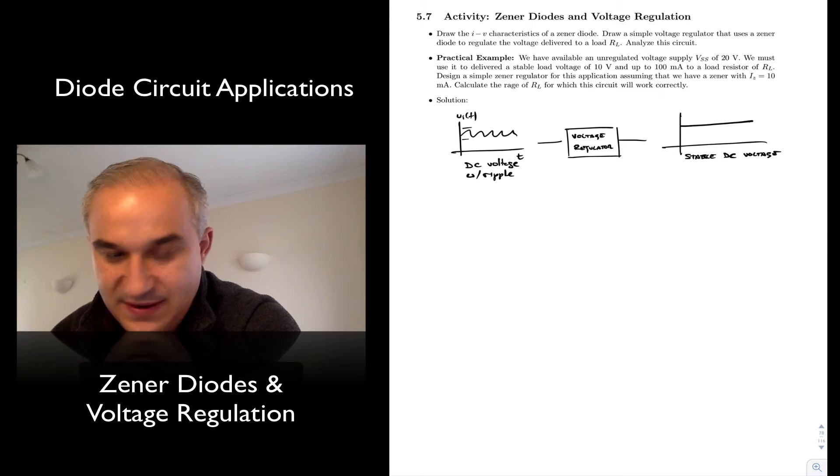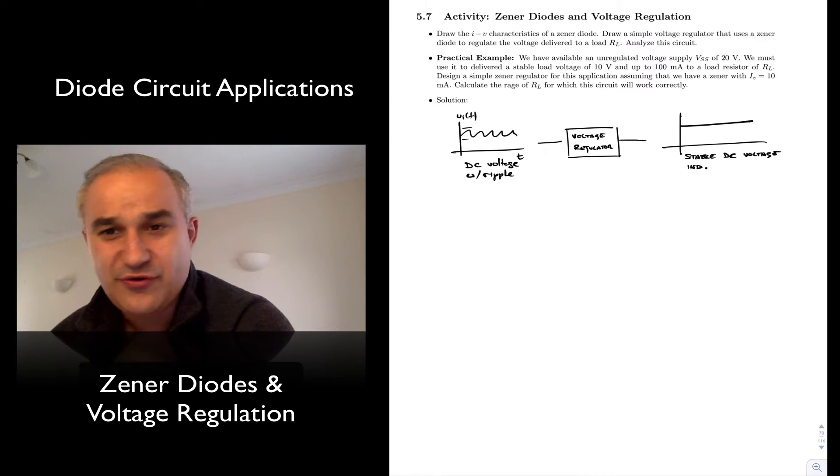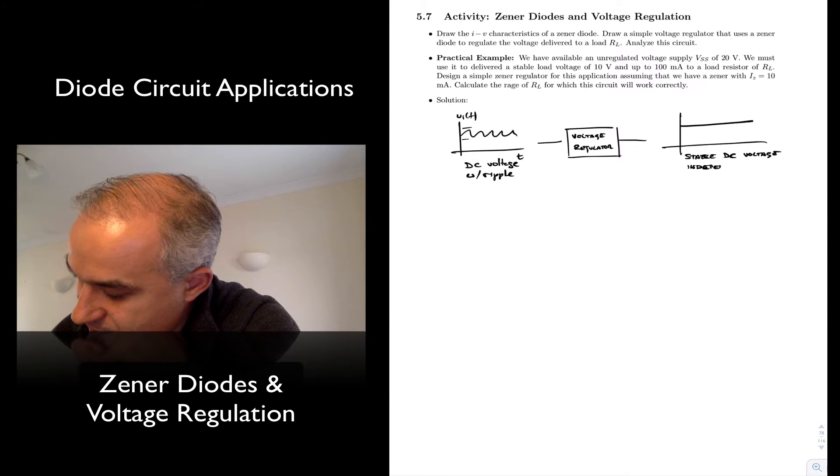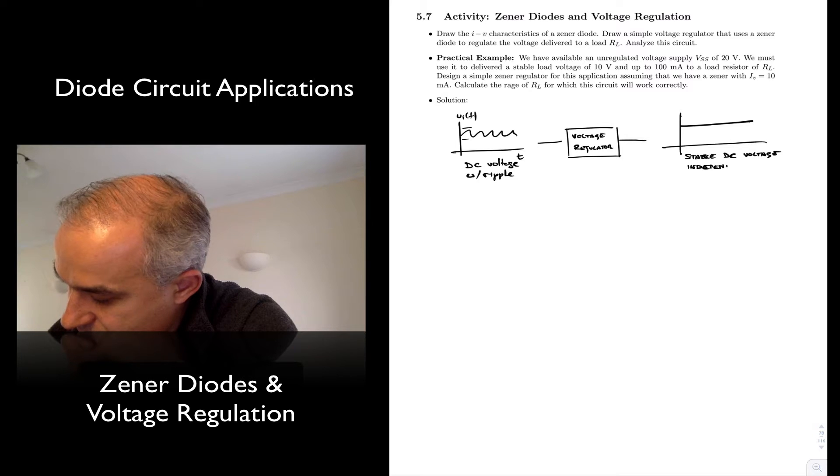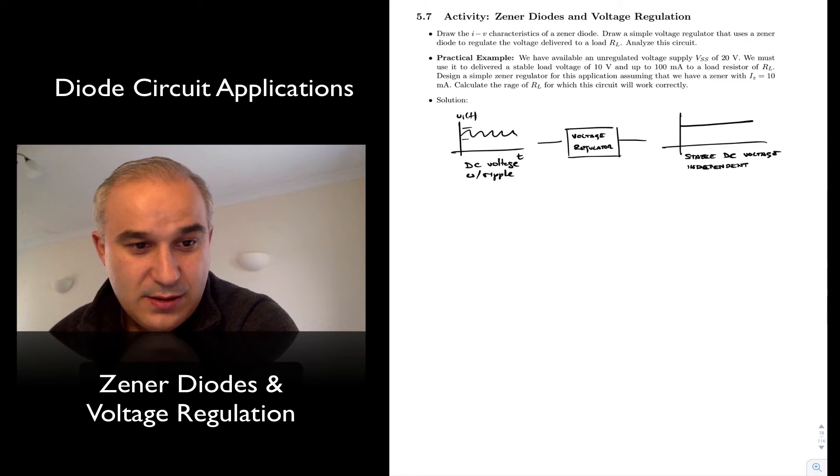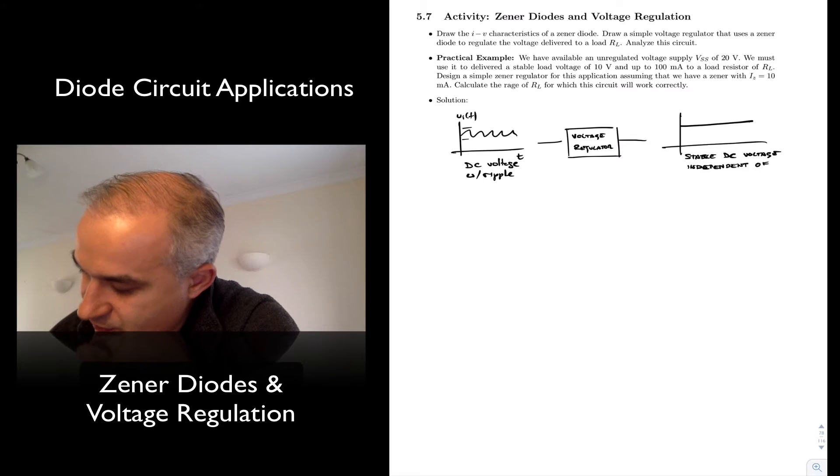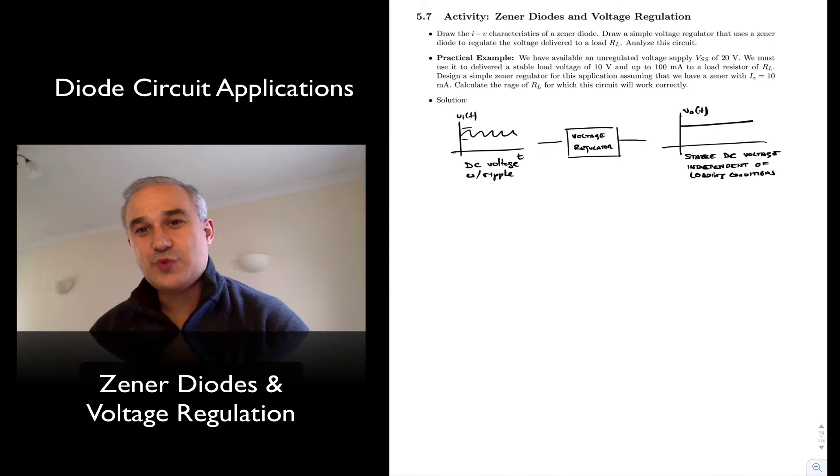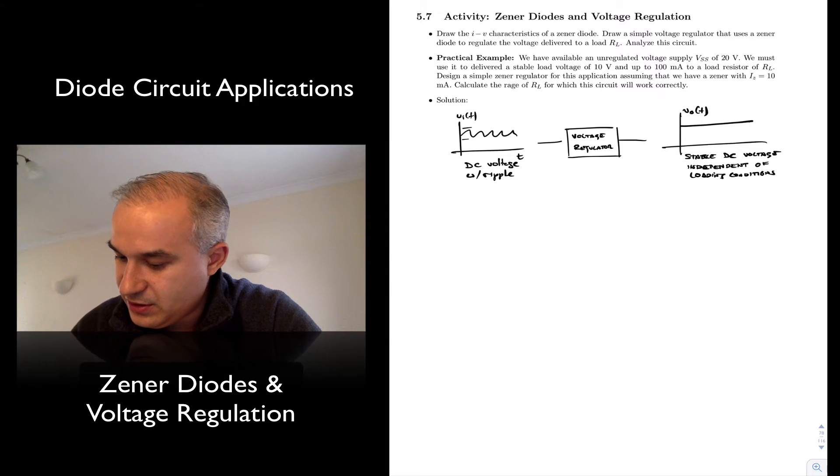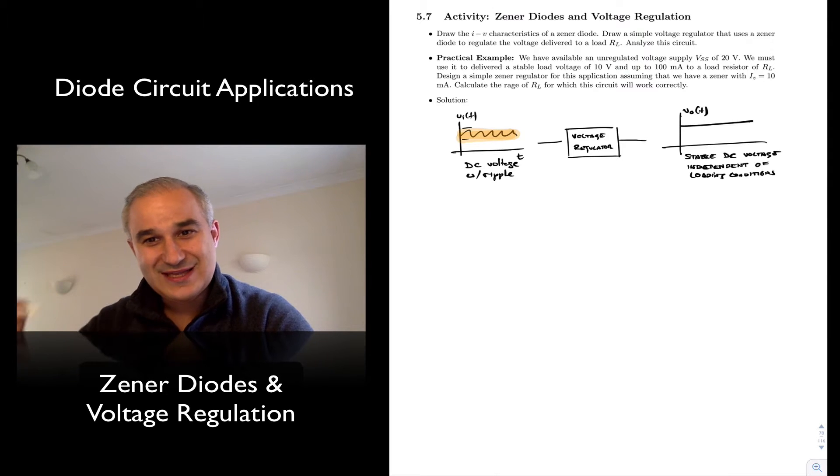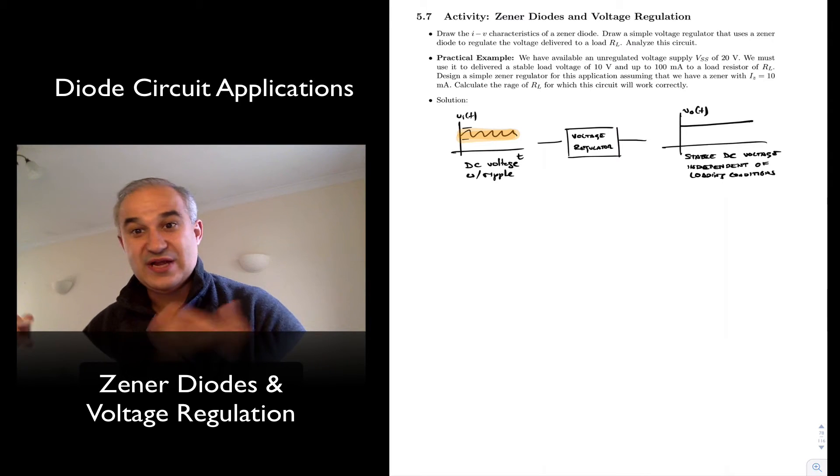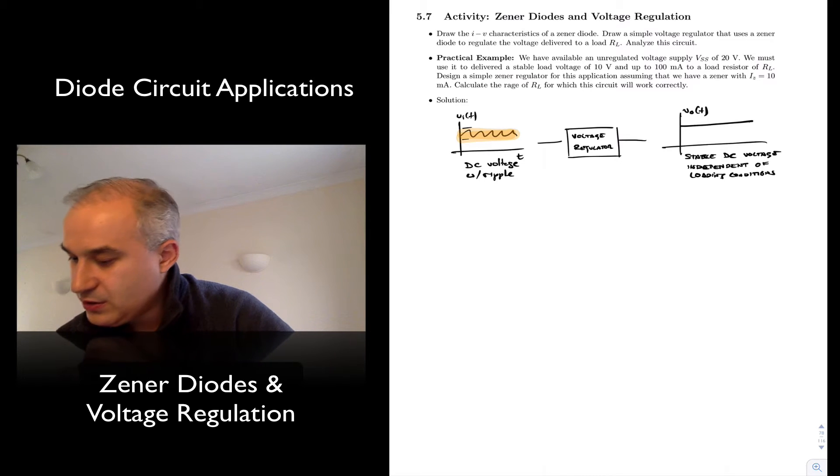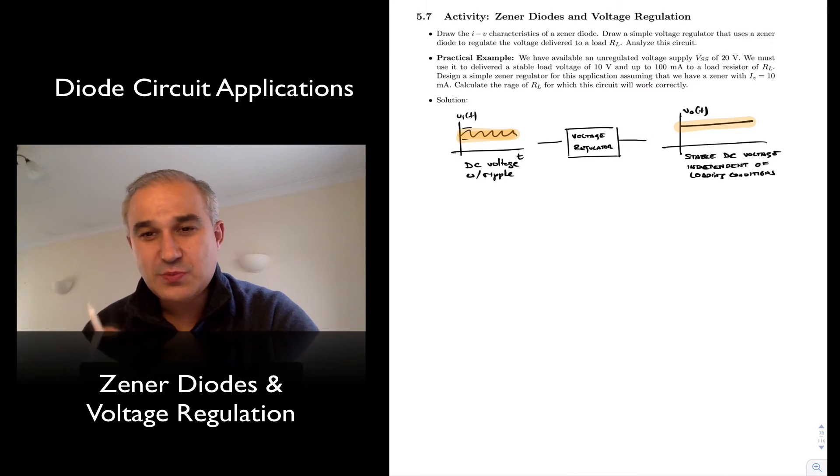That's independent over some region of operation, independent of loading conditions. And this is my output voltage. We're talking about voltage regulation. So you go from a voltage that changes due to variations in the input or variations in the load to something that is much more stable.